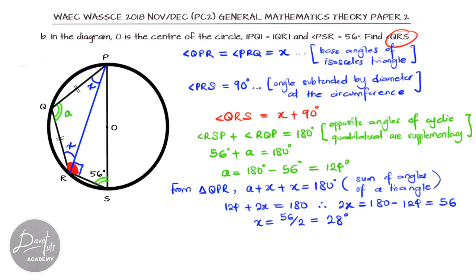Now, our QRS that we are looking for, we can solve, since we now know the value of X, and that angle QRS will be X plus 90, which is 28 plus 90, and that is 118 degrees. And with this understanding of the theorems of circle and the property of an isosceles triangle, our question is solved.